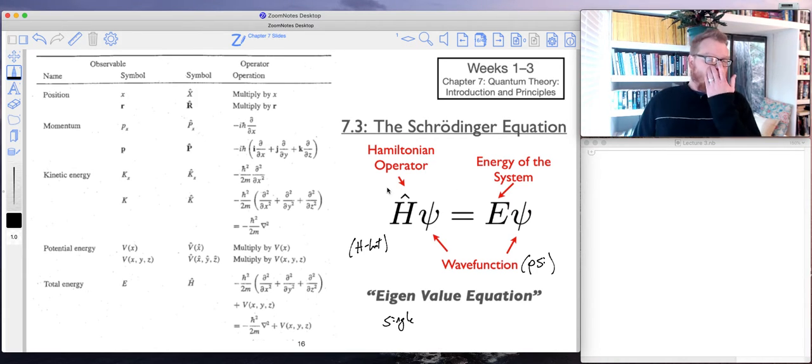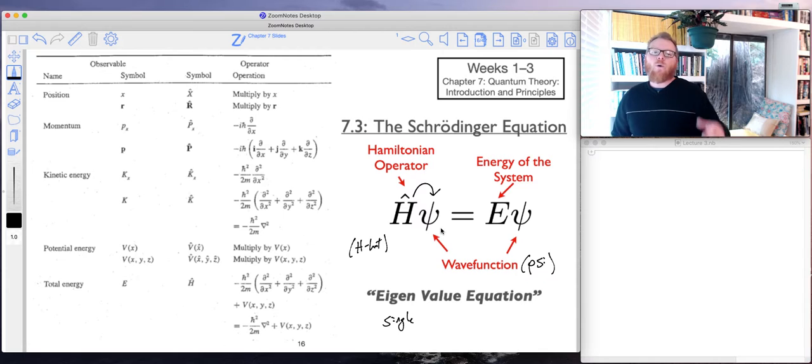And so what does that mean? So what is an eigenvalue equation, and furthermore, what's a Hamiltonian operator? So this is a kind of mathematics that is not straightforward. And for many of you, this will be the first time that you're seeing this type of mathematics.